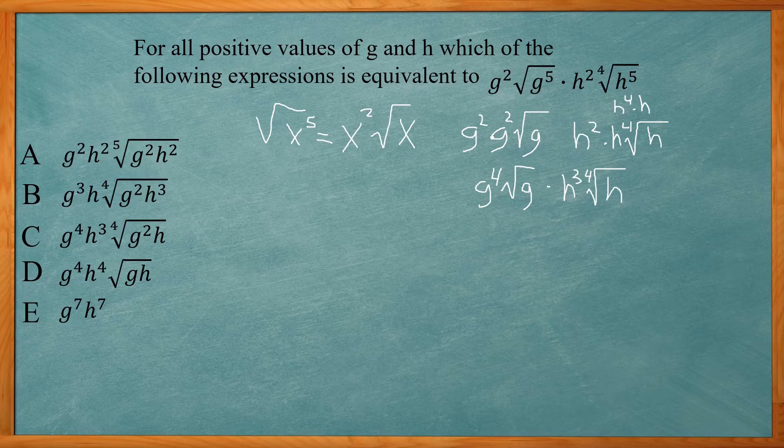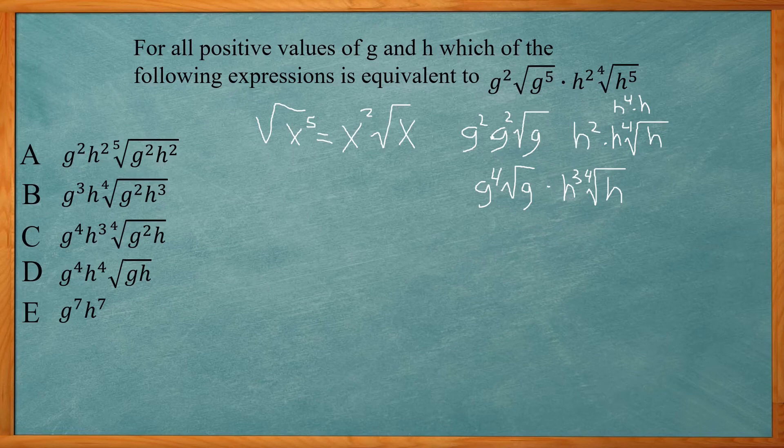Now if I look at my answer choices, I have fifth root, a fourth root, square root, and the last one has nothing on it. So here I got a square root and a fourth root. So somehow I need to combine both of those.